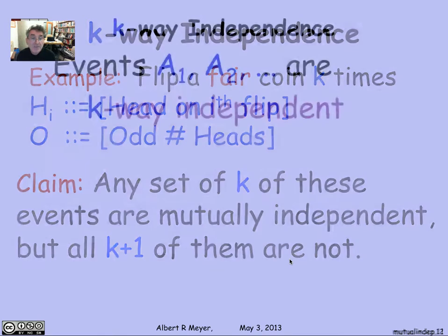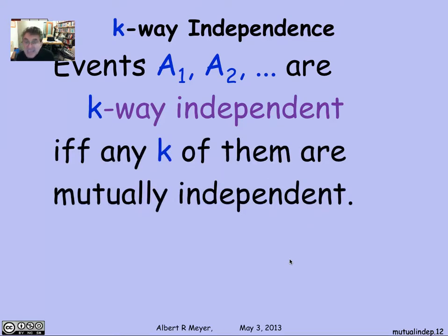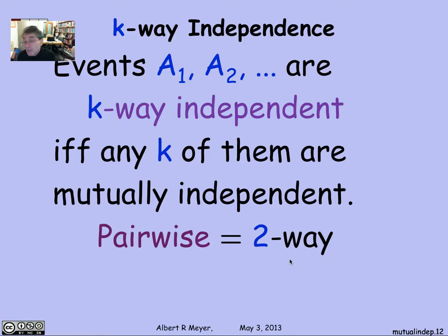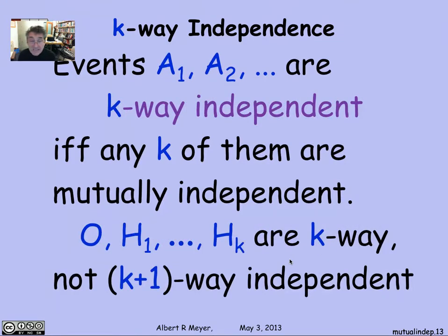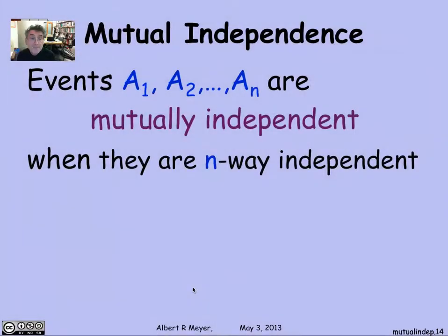In general, events A1 through An are k-way independent if any k of them are mutually independent. Pairwise independence is just the case of two-way independence. With k coin flips, the events O and H1 through Hk are k-way independent but not k+1-way independent. Mutual independence of n sets is simply n-way independence.